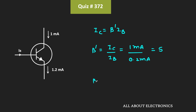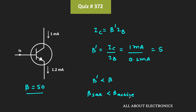If you notice, this β' is less than β, because we have been given that β is equal to 50. That means with the given currents, the value of β is less than the nominal value. In the saturation region, the value of β (β_sat) is less than β_active. That means whenever the transistor is operating in the saturation region, β_sat is less than β_active, and that is the case over here.